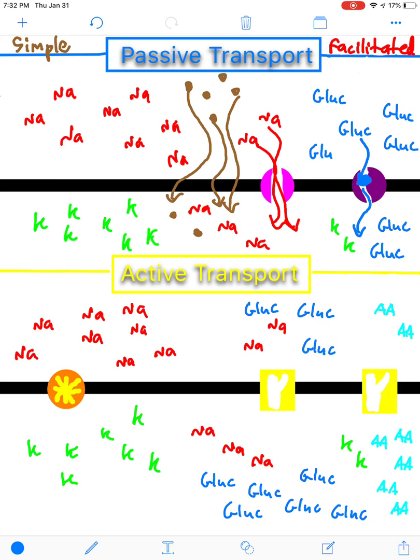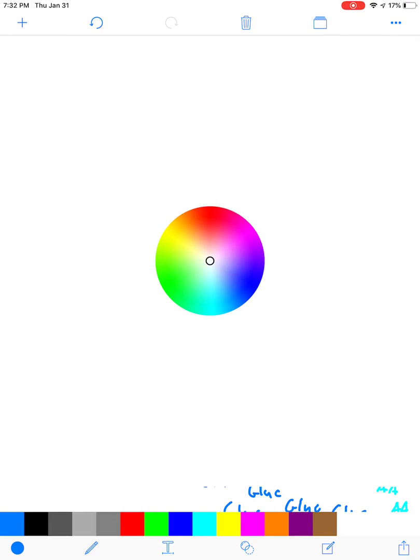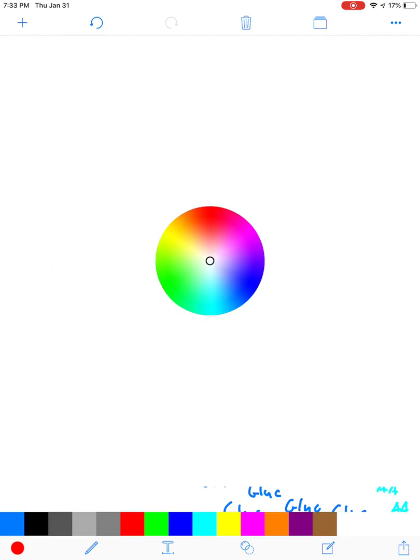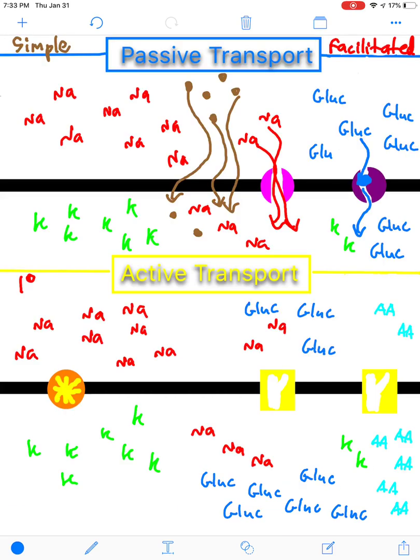Now, active transport is quite different. Active transport requires ATP. Needs energy to move things against their gradient. So, here you can think of it taking a big, heavy rock and rolling it up the hill. And that takes your energy to do so. So, for here, you've got two types. You have primary active transport. And then you're going to have secondary active transport.